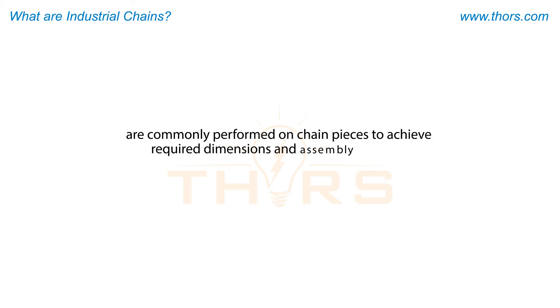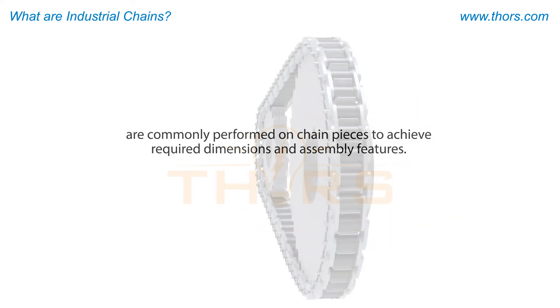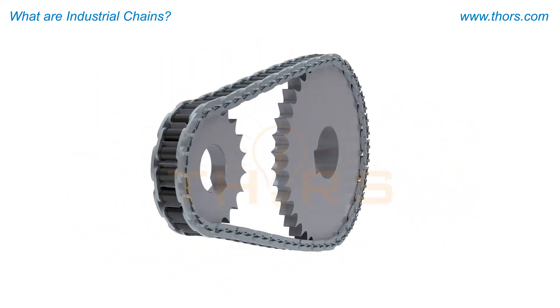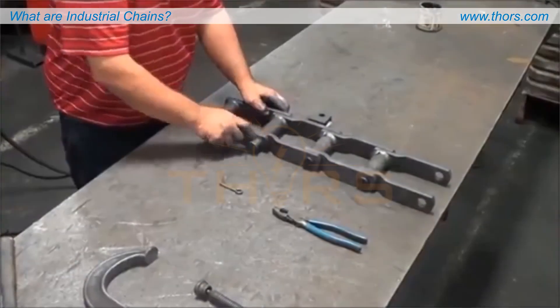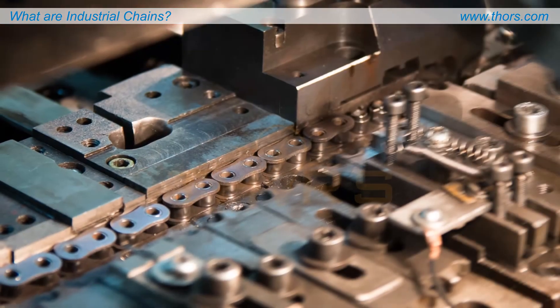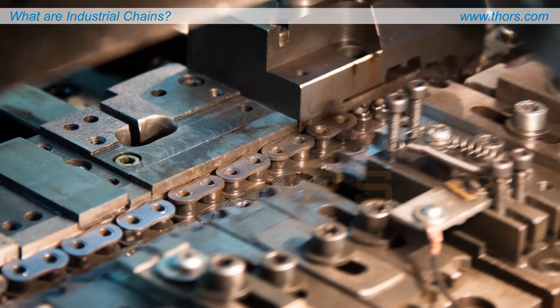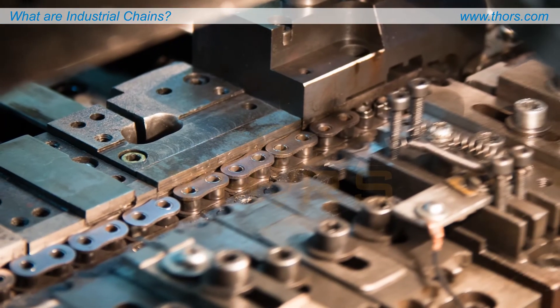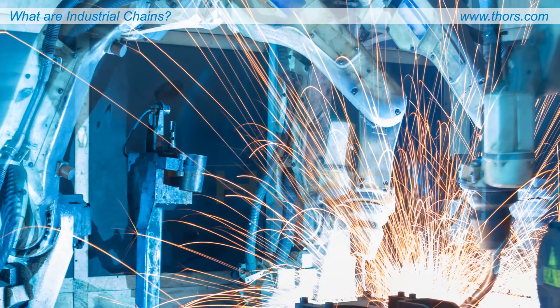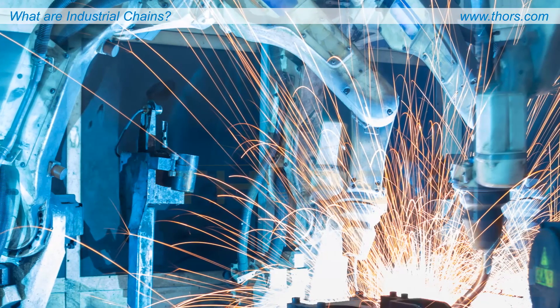Industrial chains may be assembled by either manual or automated operations. In addition, some chains are robotically welded during the assembly process.